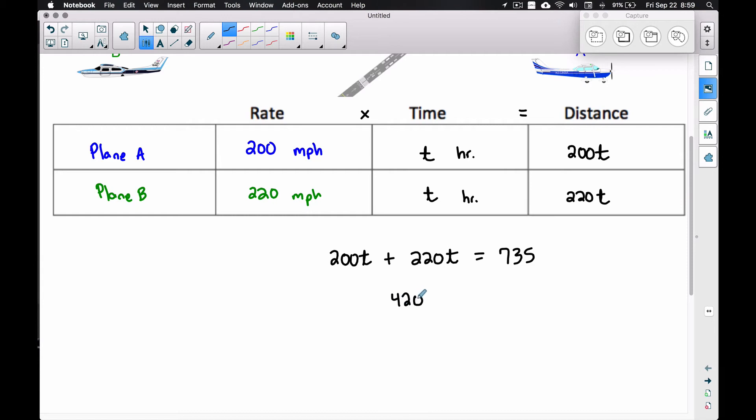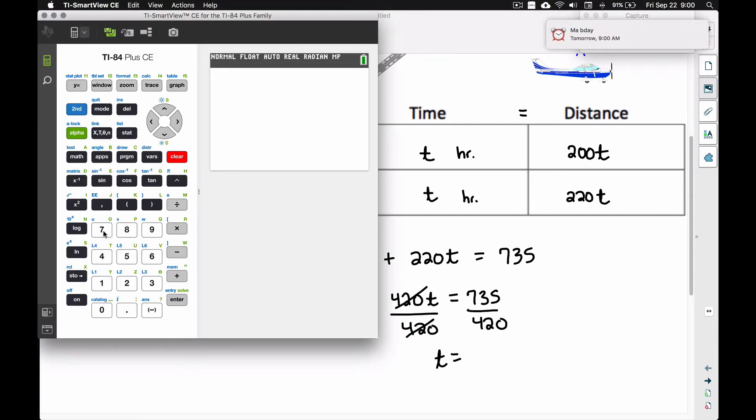Now we want to divide by 420. Going to the calculator, let's do 735 divided by 420, and we're going to get 1.75.